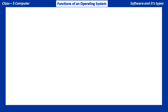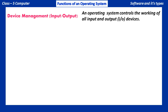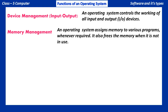Functions of an operating system. Device Management: An operating system controls the working of all input and output devices. Memory Management: An operating system assigns memory to various programs whenever required. It also frees the memory when it is not in use.